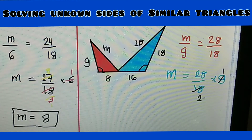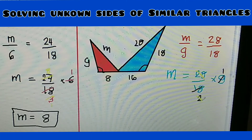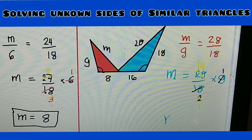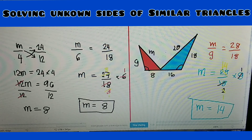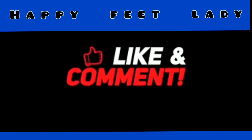Is 28 divisible by 2? Yes. So 28 and 2: 2 becomes 1, and 28 divided by 2 is 14. So what's left is 14. Therefore m is equal to 14. Any questions?